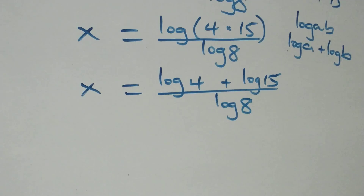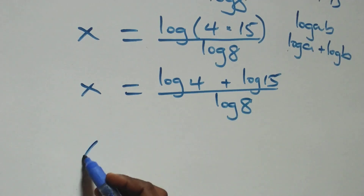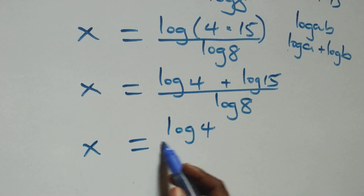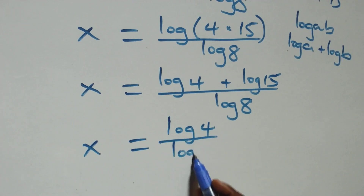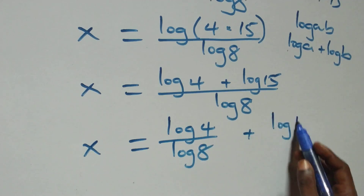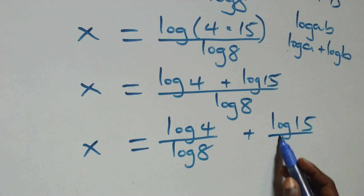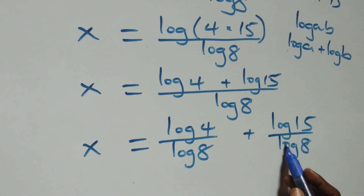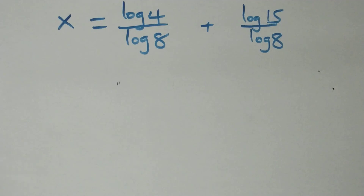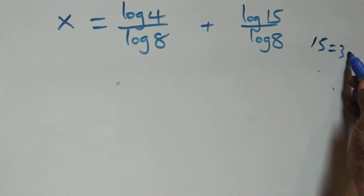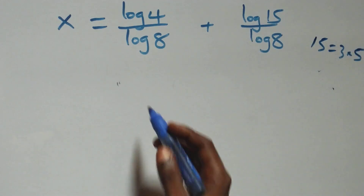We separate this into two fractions and we have x equals to log 4 over log 8 plus log 15 over log 8. Also here we can rewrite 15 as 3 times 5.